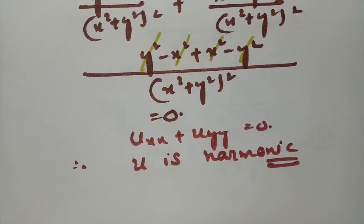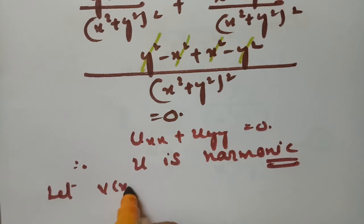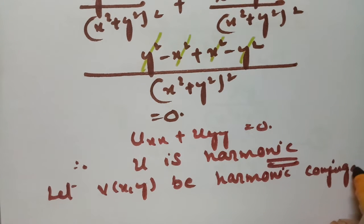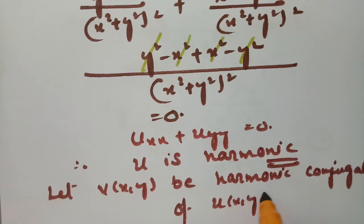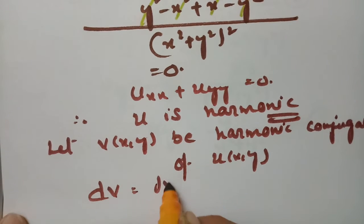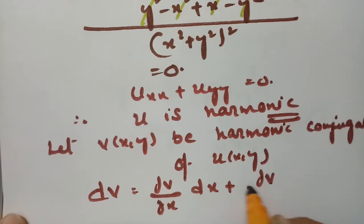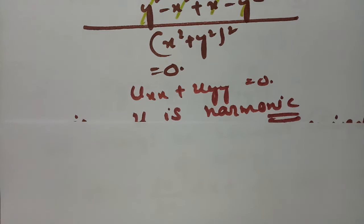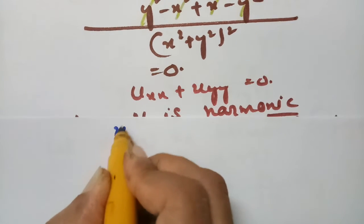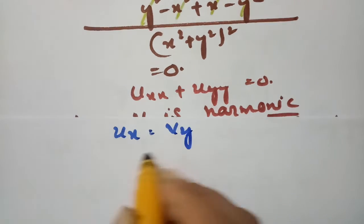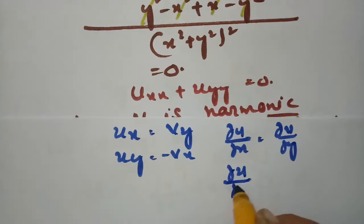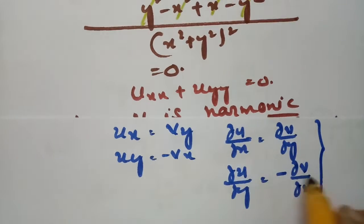Now we need to find the harmonic conjugate. Let v(x,y) be the harmonic conjugate of u(x,y). We use the formula: dv = (∂v/∂x)dx + (∂v/∂y)dy. Since u and v are harmonic conjugates, they satisfy the Cauchy-Riemann equations: ux = vy and uy = −vx.